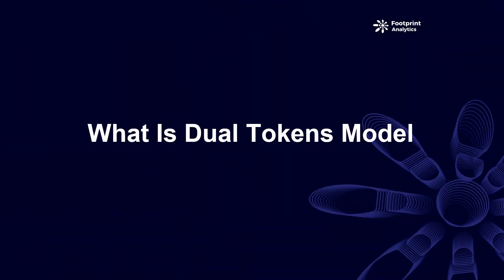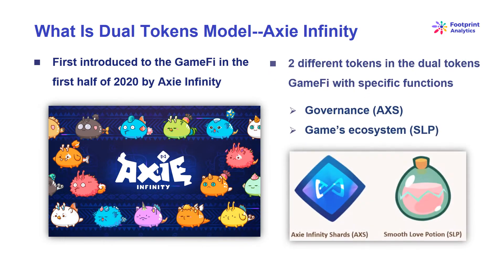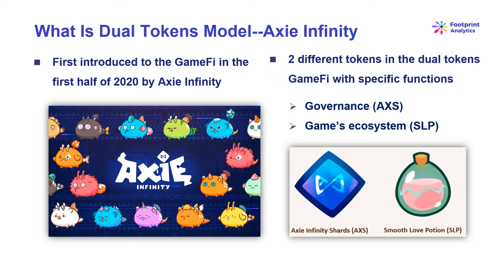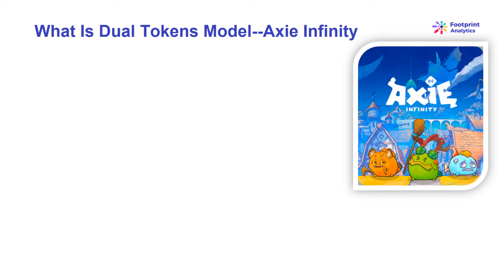Let's begin with its background. The dual token model emerged in the first half of 2020, when Axie Infinity introduced SLP — Smooth Love Potion — as a way to reduce selling pressure on AXS, the original game token of Axie Infinity. Since then, almost all major titles have had a dual token economy. To understand how dual token games work and why this model exists, we should take a look at how Axie rolled out SLP.